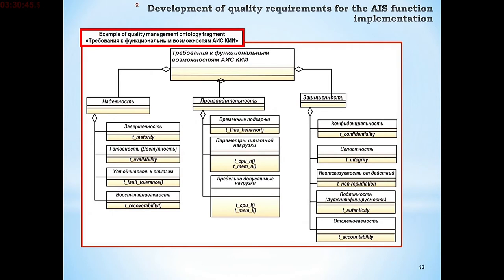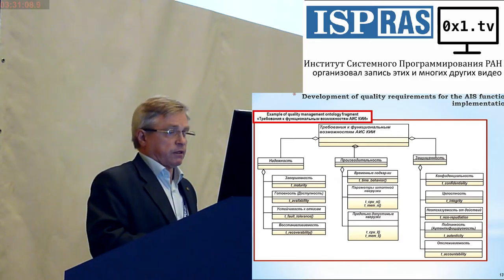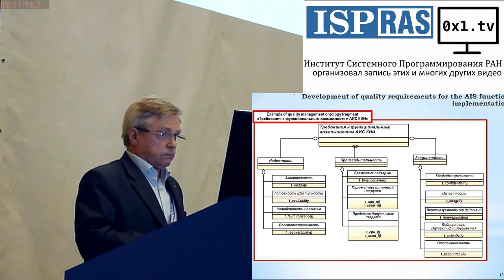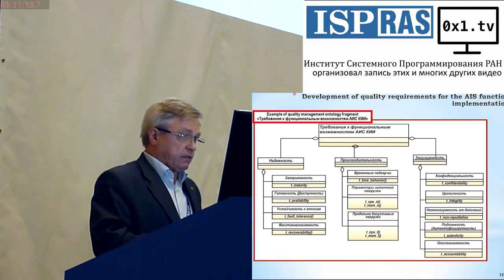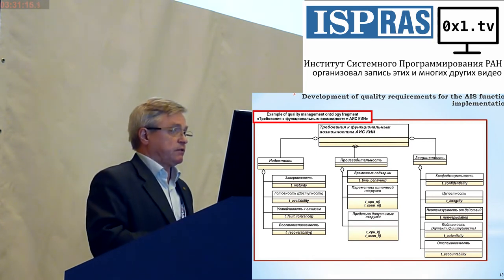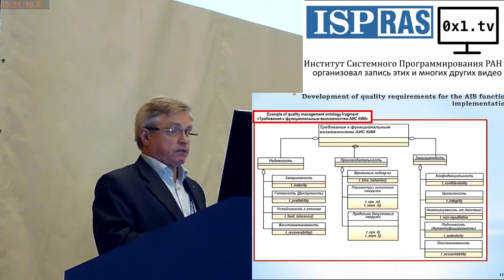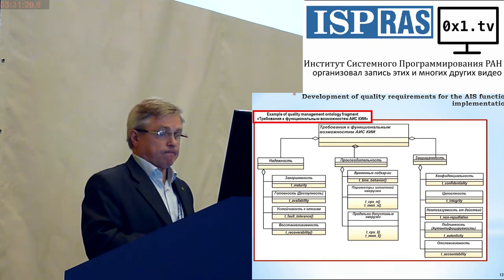Every functional requirement has a specific requirement for quality of execution. We have three groups of requirements — three characteristics: reliability, productivity, and protectiveness. From the ontology, every one of them uses their sub-characteristics, and for every sub-characteristic, indicators are defined, and means of verification, testing, and tracking are also developed.